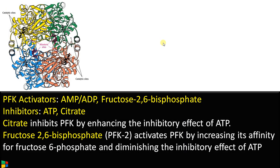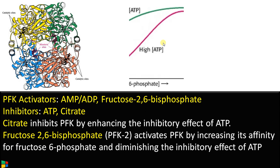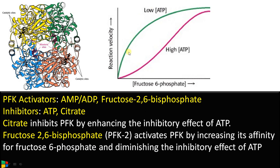PFK has a catalytic site and an allosteric site. PFK is activated by AMP and ADP, indicating low energy levels, and also by fructose 2,6-bisphosphate. Low ATP activates the enzyme, whereas high ATP concentration inhibits it. Citrate is also an inhibitor — citrate inhibits PFK by enhancing the inhibitory effect of ATP. ATP binds to the allosteric site and causes a conformational change in the catalytic site, minimizing affinity towards the substrate fructose 6-phosphate.